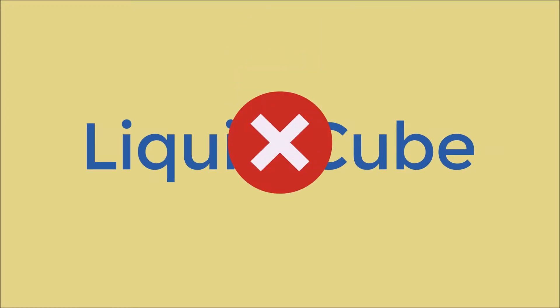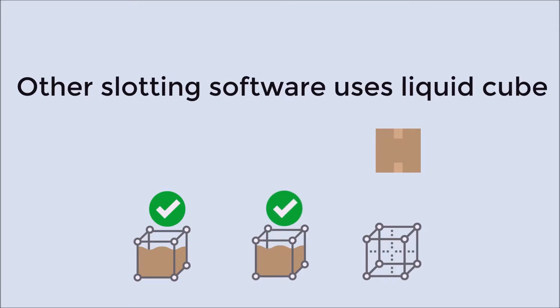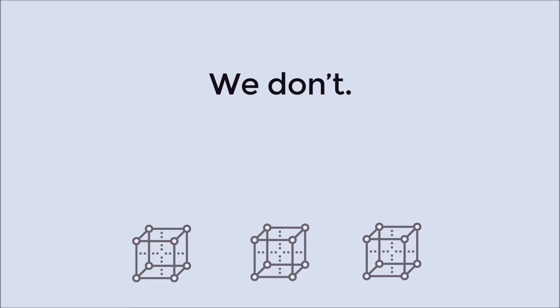Gone are the confines of Liquid Cube. Putting square pegs into round holes through virtual product cubes is a thing of the past. Slot 3D provides you with the dimensionality of both the product and the location to accurately determine if the product will fit and how many the location can hold.